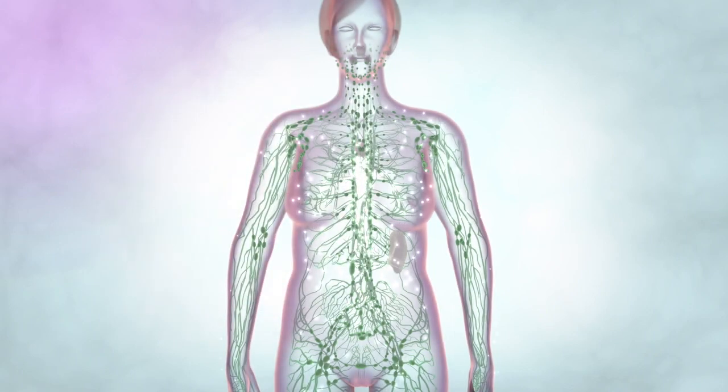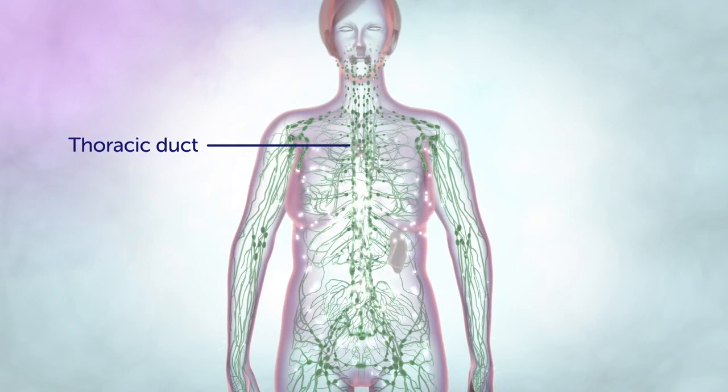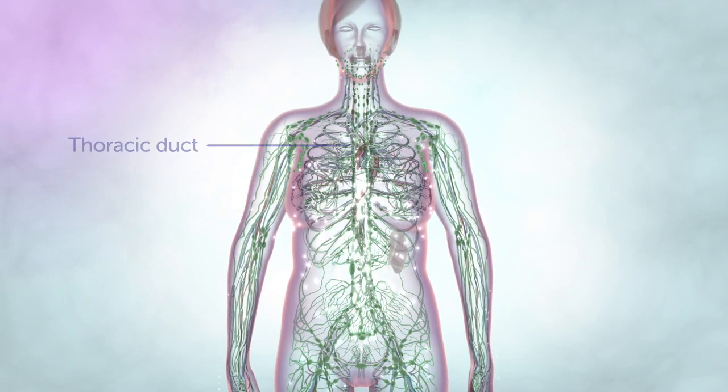The lymph eventually reaches a large vessel at the base of the neck, called the thoracic duct, which passes the filtered lymph back into the blood circulation.